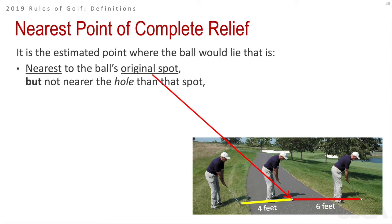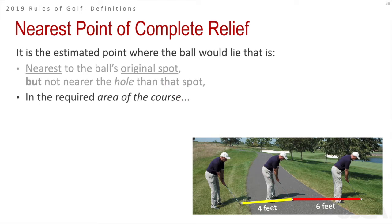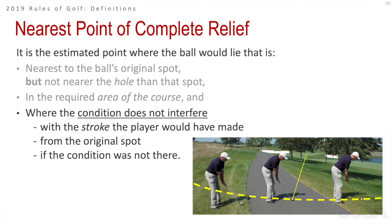In this picture, the golfer ended up in the middle of a cart path. They decide which side — left or right — moves the golf ball the least distance. This graphic shows the nearest point is to the left because the ball moves four feet rather than six. It has to be in the required area of the course, and where the condition does not interfere with the stroke the player would have made from the original spot if the condition was not there.